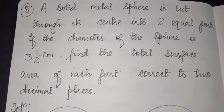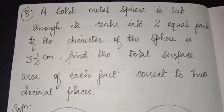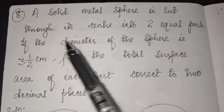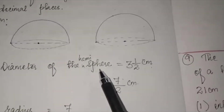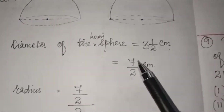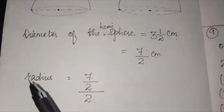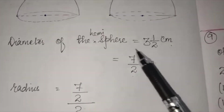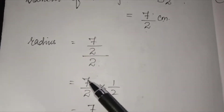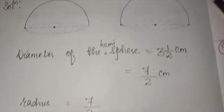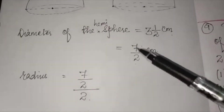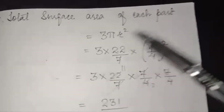The hemisphere has diameter 3½ cm, which is 7/2 centimeters. So radius = 7/2 × 1/2 = 7/4 centimeters. The radius of each hemisphere is 7/4 centimeters. We need to find the total surface area of each part.